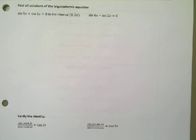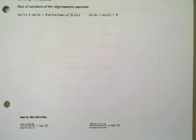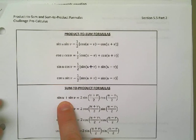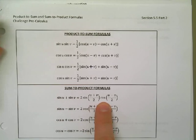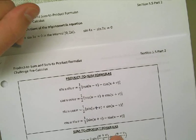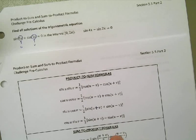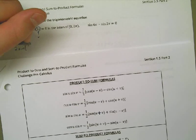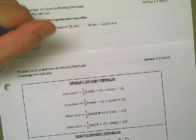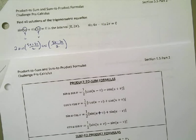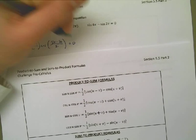I see that I have a sine plus a sine. That makes me think of this formula right here. I'm going to turn a sum into a product and that's going to make it easier to solve. So I'm going to identify u and v. Looks like u is going to be 5x and v is going to be 3x. That means I can rewrite this then as 2 times the sine of (5x + 3x)/2 times the cosine of (5x - 3x)/2.